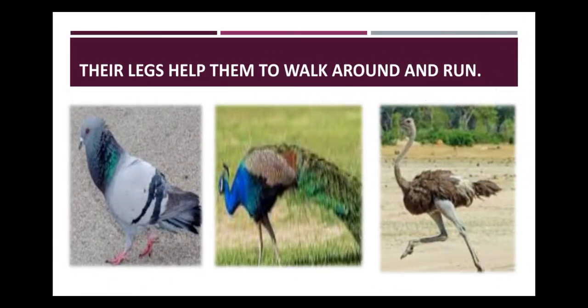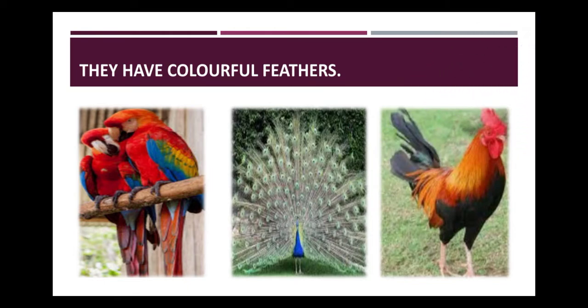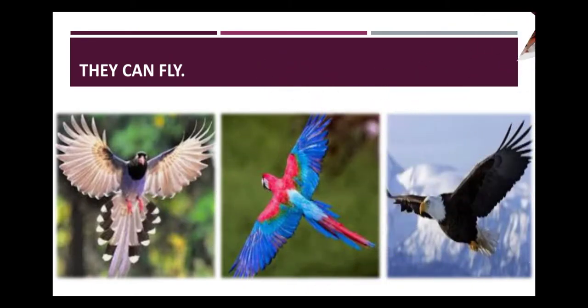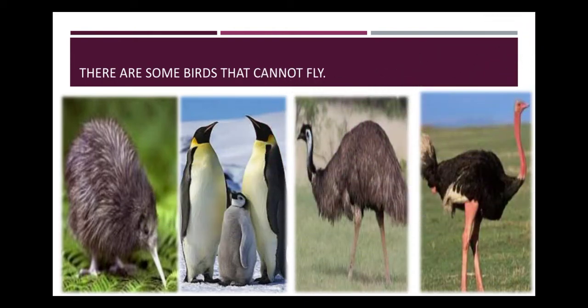The legs help them to walk around and run. They have colorful feathers. They can fly. There are some birds that cannot fly — for example, Kiwi, Penguin, Emu and Ostrich.